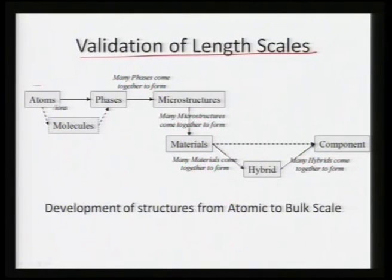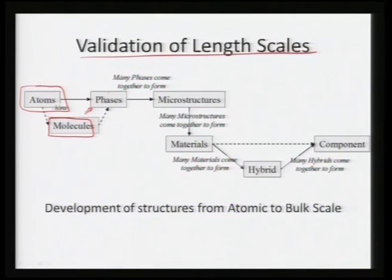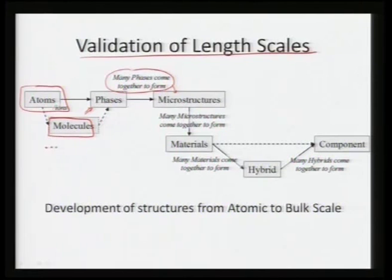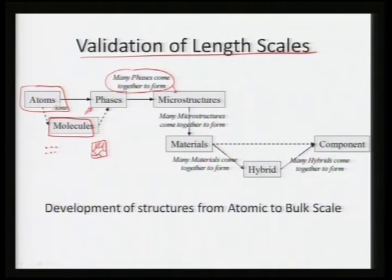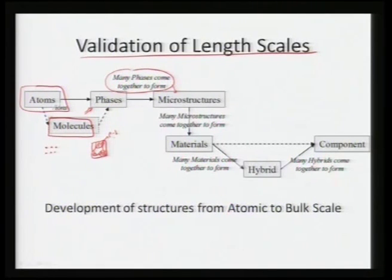Atoms, ions, or molecules tend to form certain phases. A phase can be defined either as a structure or a property. Many phases come together to form a microstructure. Atoms form molecules or ions, which form certain phases — we can have one phase, a second phase, or multiple phases. These come together to form a microstructure.